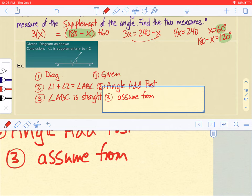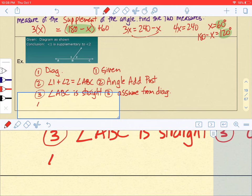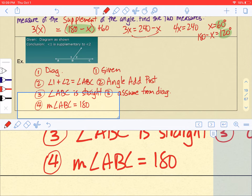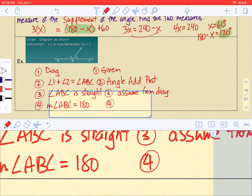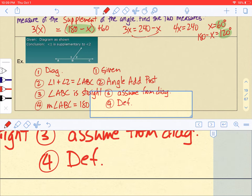Now we can say the measure of angle ABC is 180. Why? That's how we define a straight angle.